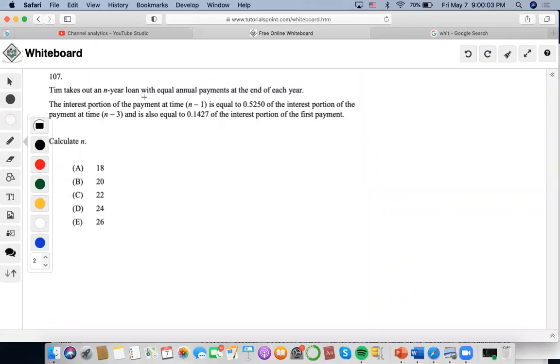Okay, this one is Jim takes out a year loan with equal payments. The interest portion at a given time - so they're giving us interest portion times.